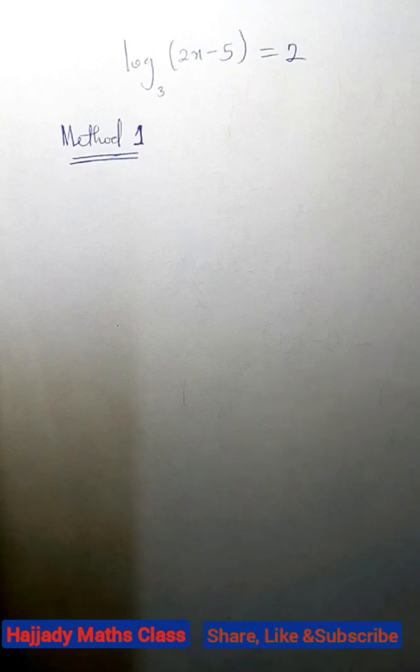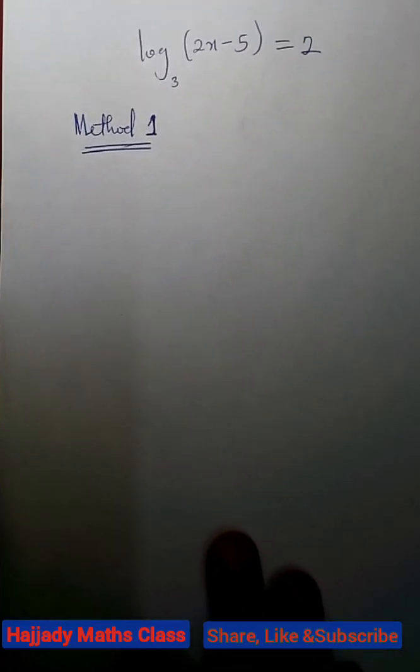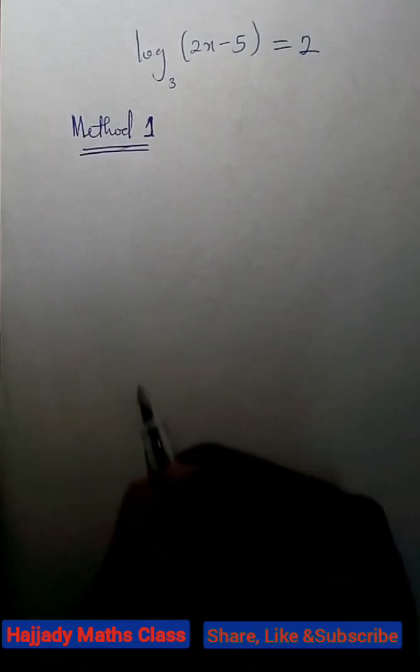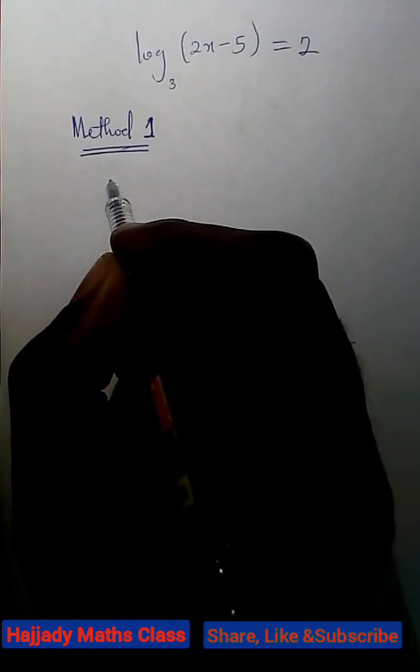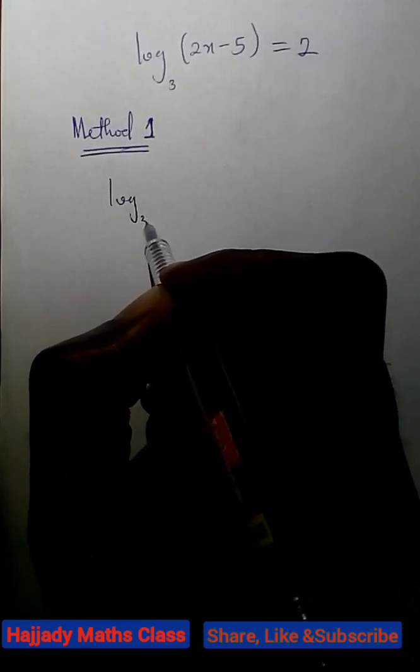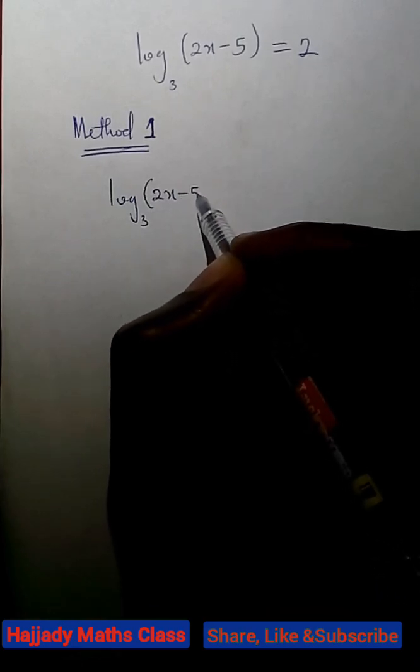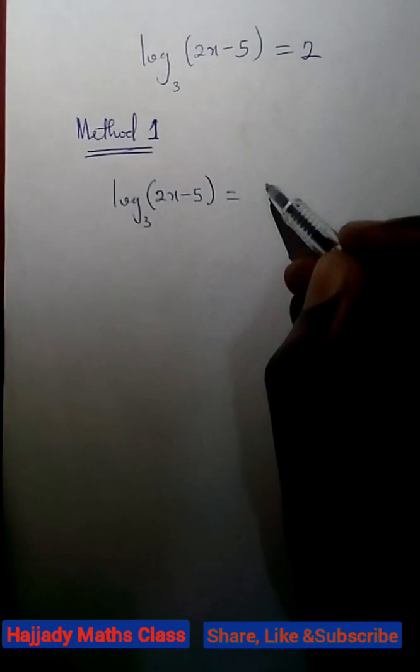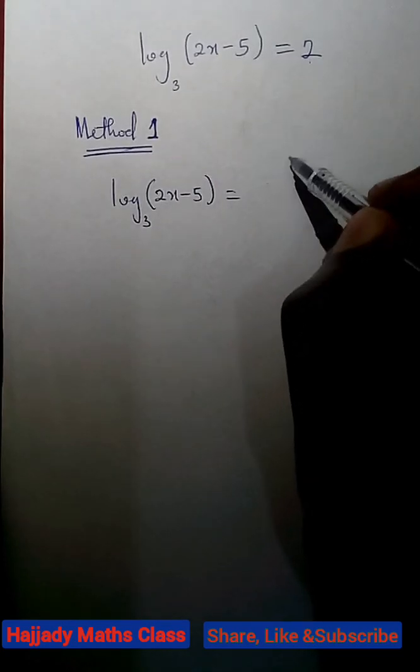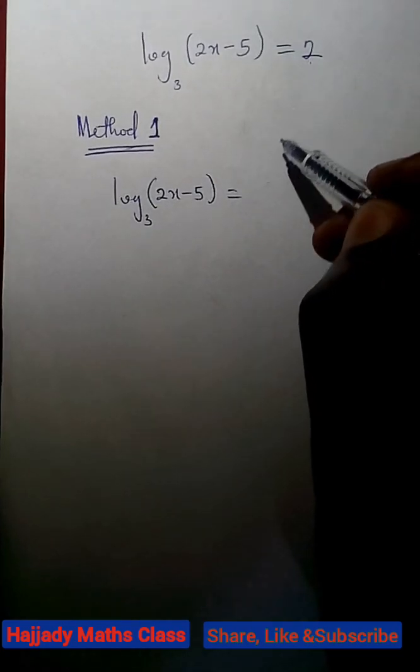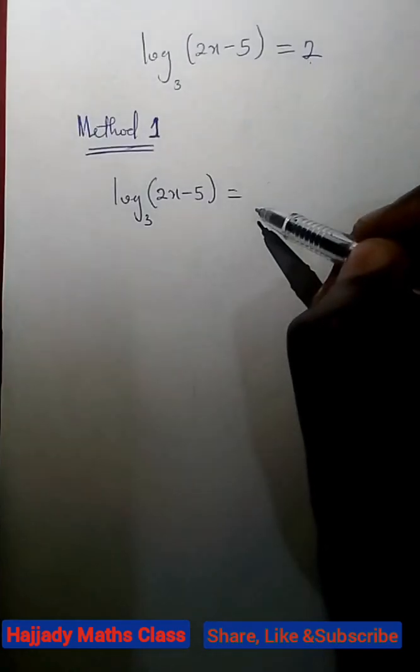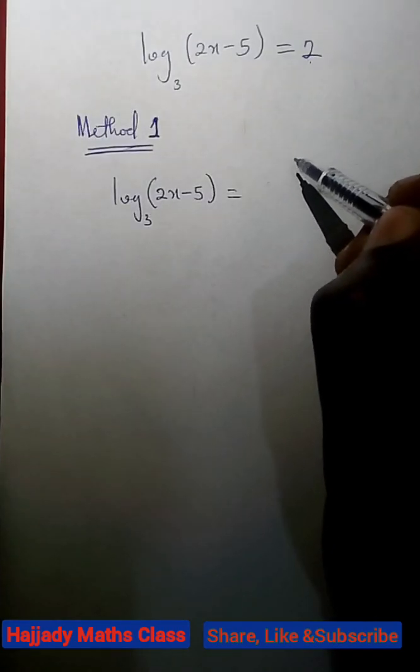In doing this question class, we have log base 3 of 2x minus 5 equals 2. The first method is we have log base 3 of 2x minus 5 equals. Looking at these two, this 2 will be expressed in logarithm form. The 2 will be expressed in logarithm form.